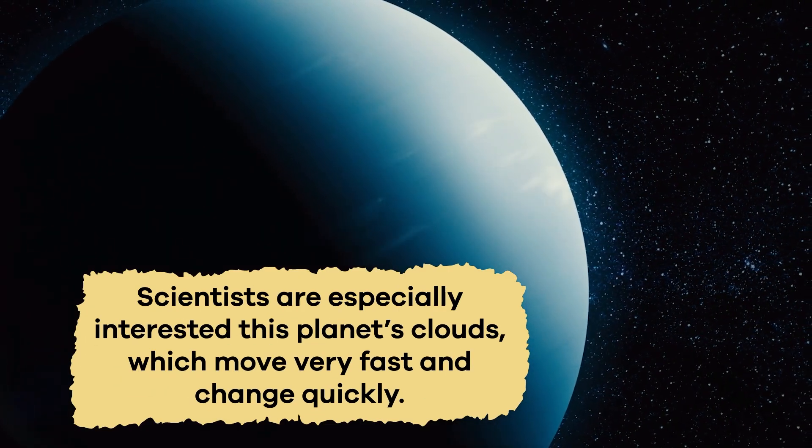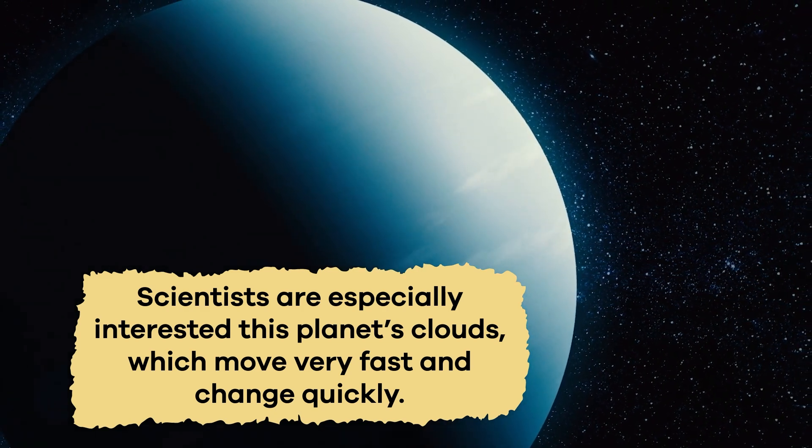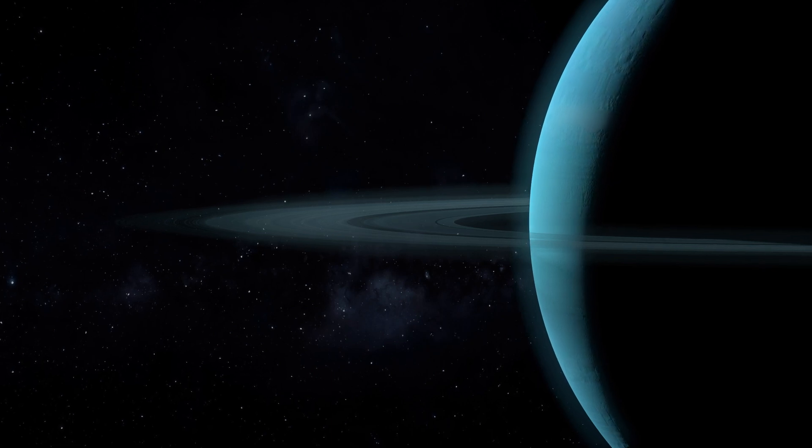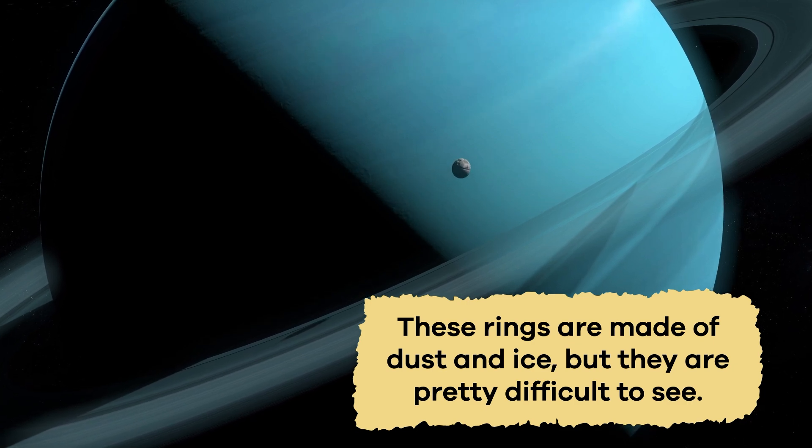Scientists are especially interested in this planet's clouds, which move very fast and change quickly. Would it surprise you to learn that Uranus has rings? It's true! These rings are made of dust and ice, but they are pretty difficult to see.